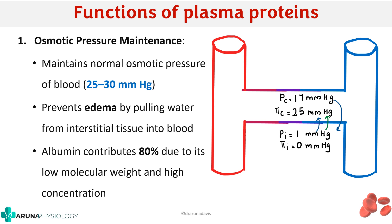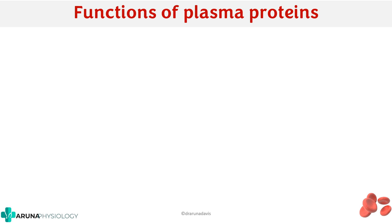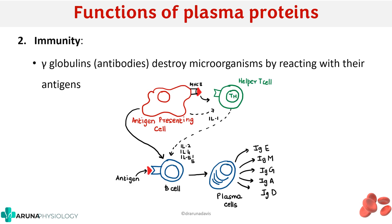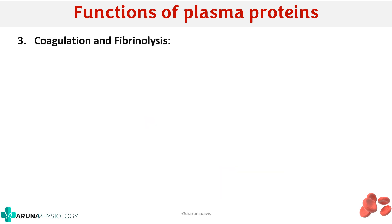The second important function of plasma proteins is immunity. In humoral immunity, immunoglobulins — which are basically globulins or proteins — destroy microorganisms by reacting with their antigens. B cells are converted to plasma cells which release immunoglobulins like IgE, IgM, IgG, IgA, and IgD. Thus plasma proteins have a very important role in immunity.